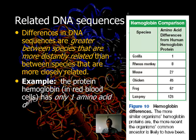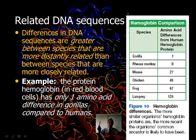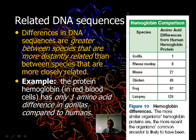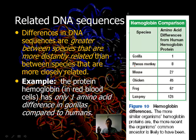DNA evidence is really compelling. Charles Darwin made predictions before we knew about meiosis, DNA sequences, amino acids, or hemoglobin — and modern sequencing has backed up his ideas, making the theory of evolution even stronger. All of these animals — gorillas, rhesus monkeys, mice, chickens, frogs, and even a lamprey — have a hemoglobin gene. If you compare the amino acid sequence differences in human hemoglobin protein, it matches evolutionary predictions remarkably well.